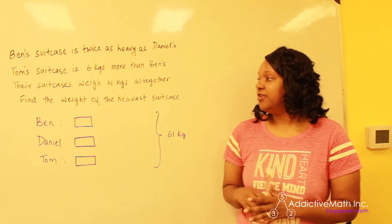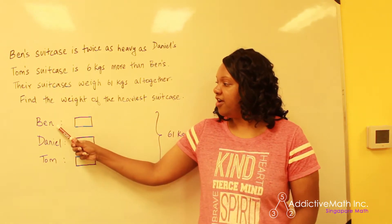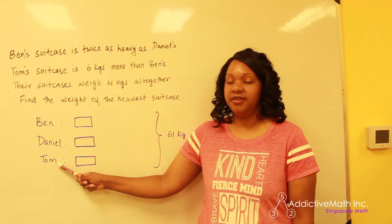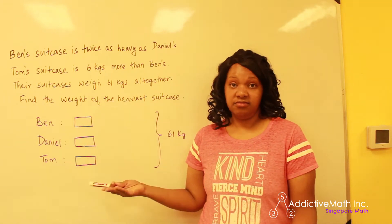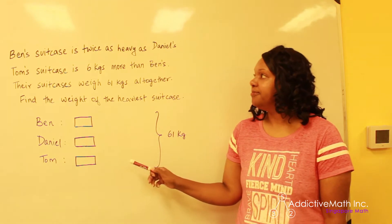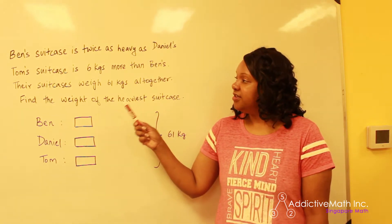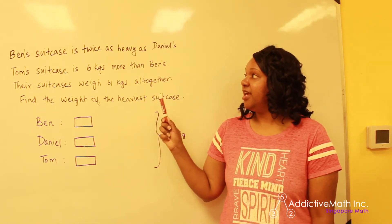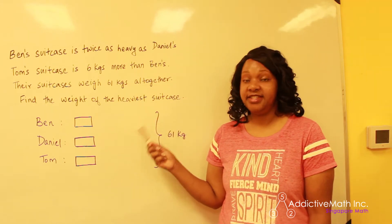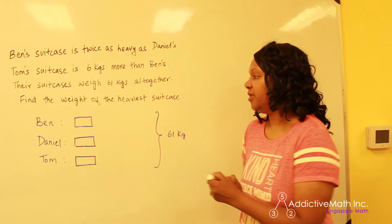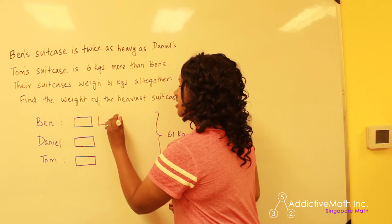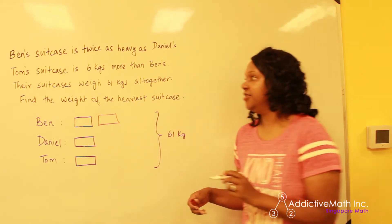Okay, so first thing you want to do, of course you want to have everyone who's involved, their names listed, but you also want to start with equal bars. So everyone has an equal bar. Now the first sentence says Ben's suitcase is twice as heavy as Daniel's. So right now they have a couple suitcases. Ben, we will add another one because his is twice as heavy as Daniel's.